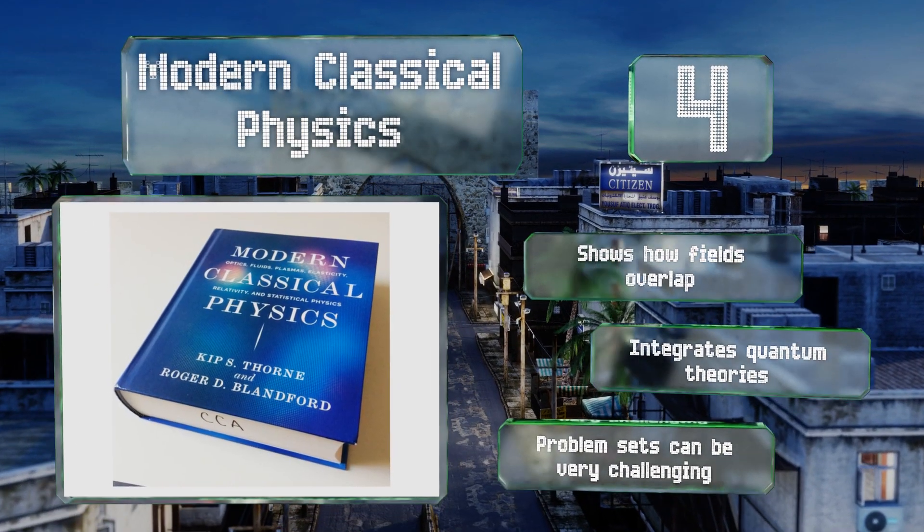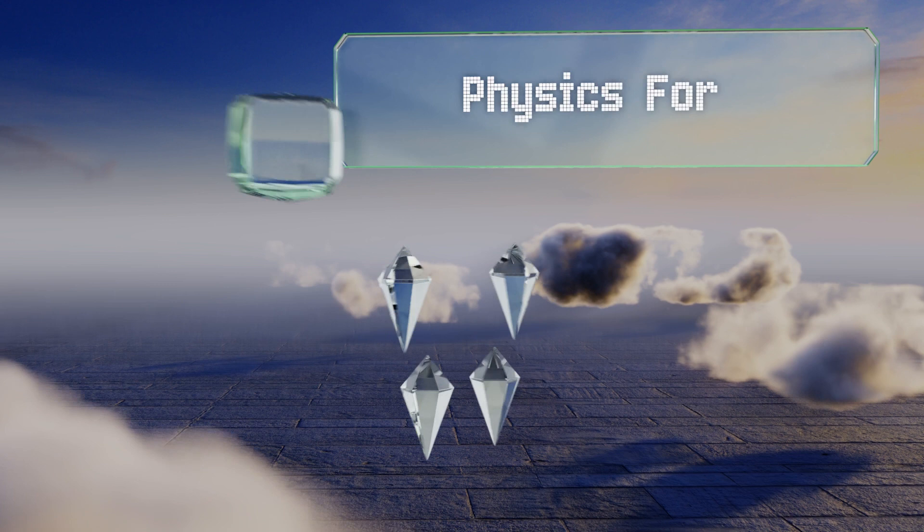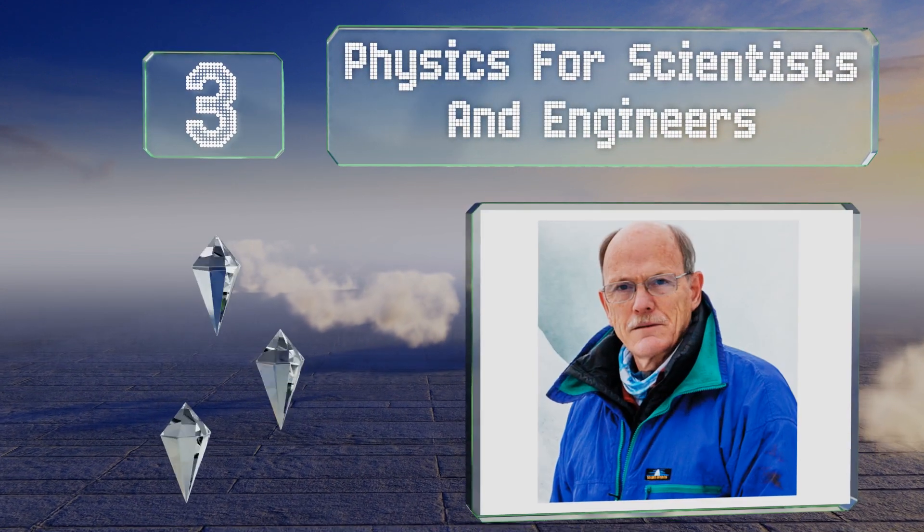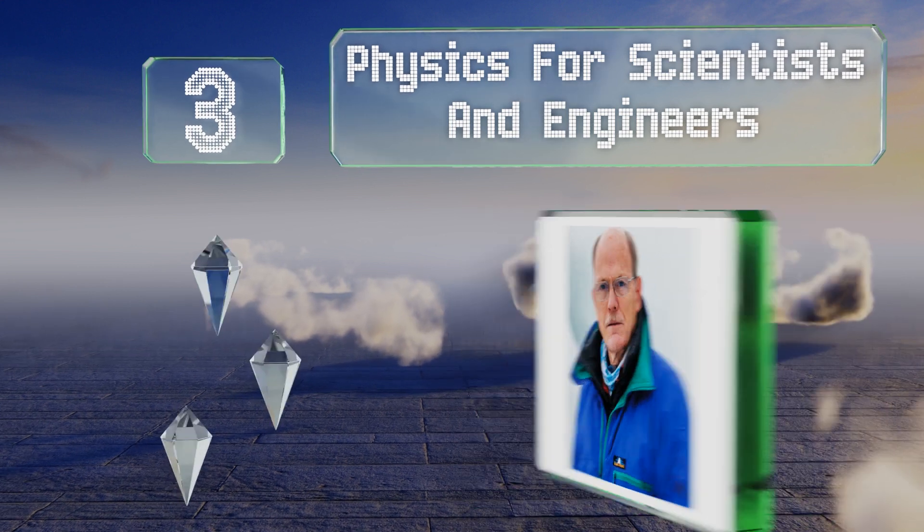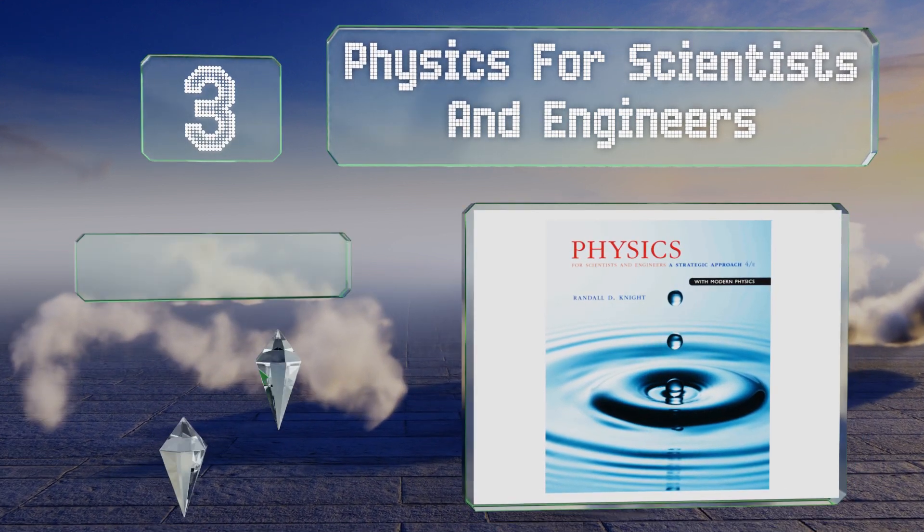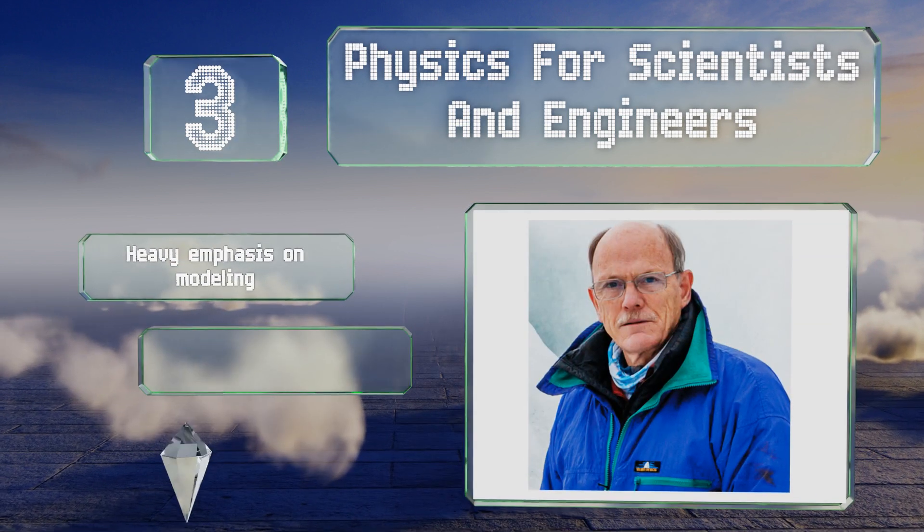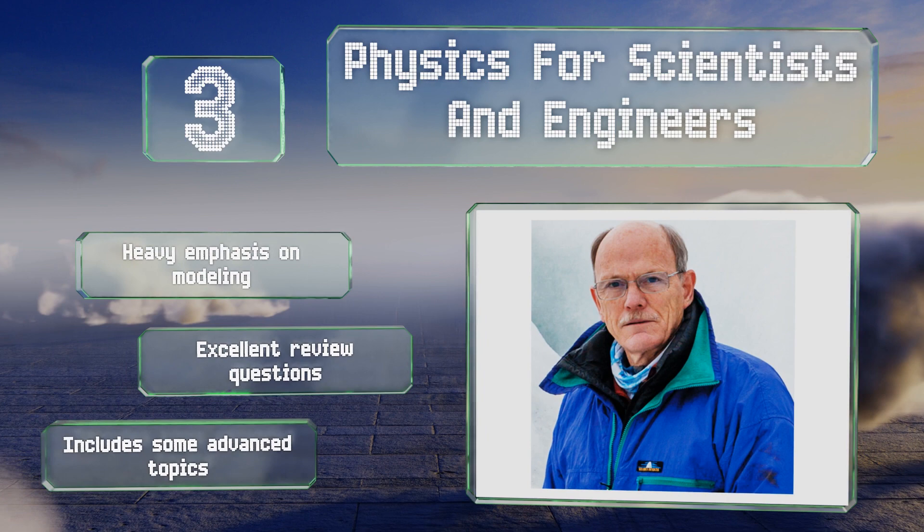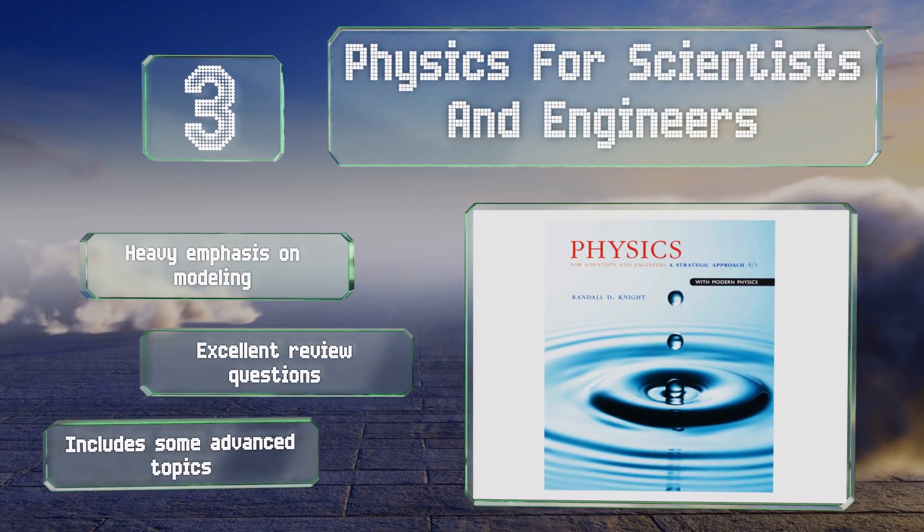Nearing the top of our list at number three, Physics for Scientists and Engineers by Randall D. Knight is geared towards students with a bit more experience than the average undergraduate. That said, it progresses at a speed that shouldn't leave anyone behind. It places a heavy emphasis on modeling and includes excellent review questions and some advanced topics.